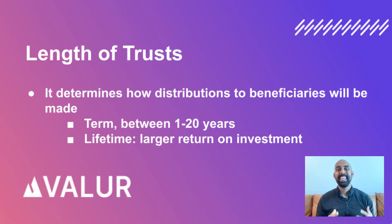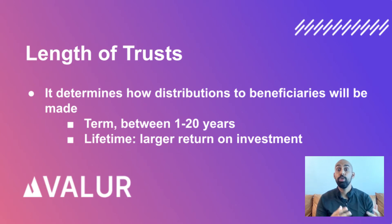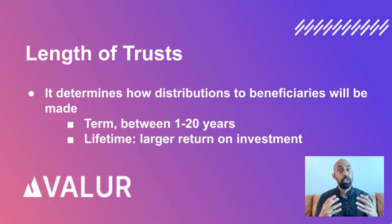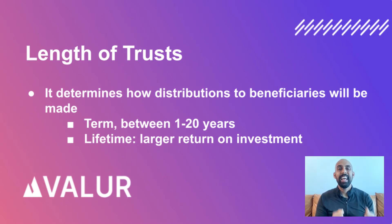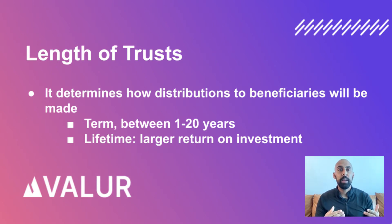So let's get started with the basics: the length of the trust. The length of the charitable remainder trust determines how long the beneficiaries — such as you and your family — will get distributions for. You will get distributions at least annually. The length of the trust can either be for a fixed period of years between 1 and 20 years, or for the lifetime of all of the beneficiaries.